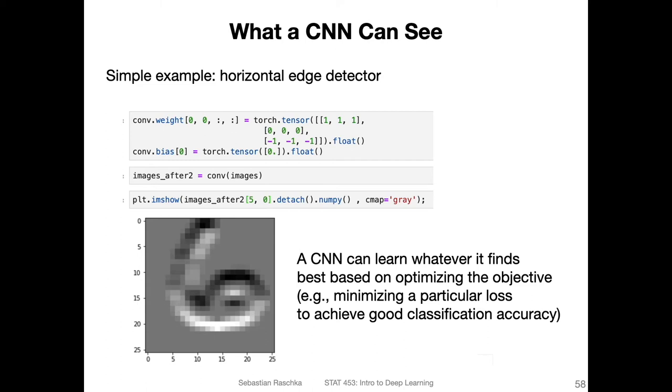Here I have the same edge detector, except that it is horizontal instead of vertical. I have a row of ones, zeros, and minus ones. You can see now that it is detecting these horizontal edges here, whereas the vertical ones, these regions are missing. This is just the bigger picture context of traditional computer vision designing different filters.